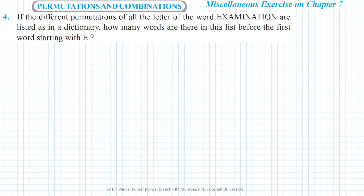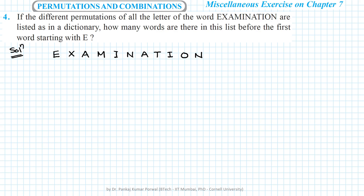In this question we are given that if different permutations of all the letters of the word EXAMINATION are listed in a dictionary, how many words are there in this list before the first word starting with E appears. So in this question, first we identify which are the letters in the word EXAMINATION.